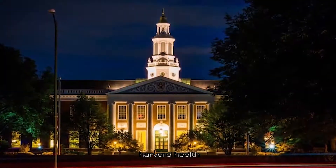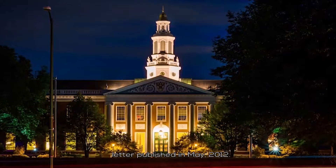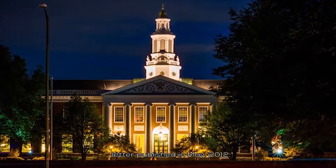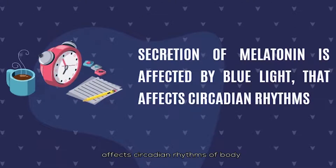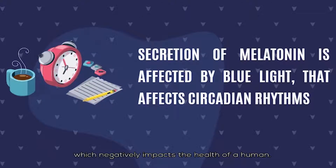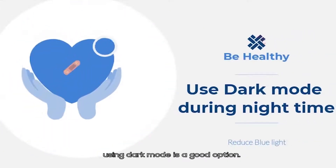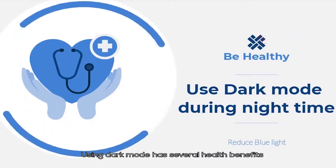According to Harvard Health, published in May 2012, the blue light from screens during late hours affects the circadian rhythms of the body, which negatively impacts the health of humans. To minimize the effect of blue light, using dark mode is a good option.